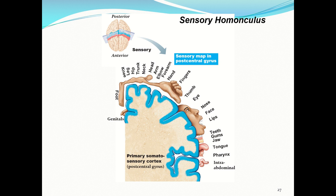The sensory homunculus maps neurons coming from different areas of the body into the somatosensory cortex. The most innervated regions are the foot, hand, and face. Hands and face are our most important features — we rely on them for dexterity, communication, and protection. Our feet are highly sensitive as well since we walk on them constantly.